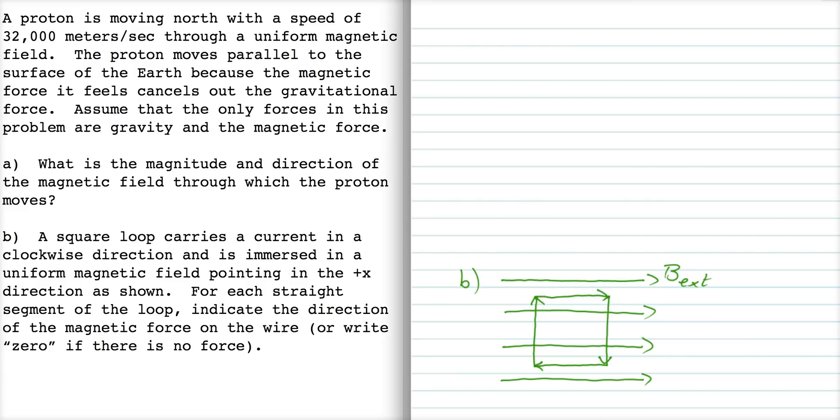Okay, so we start with part A, which is asking about this proton moving through a uniform magnetic field.